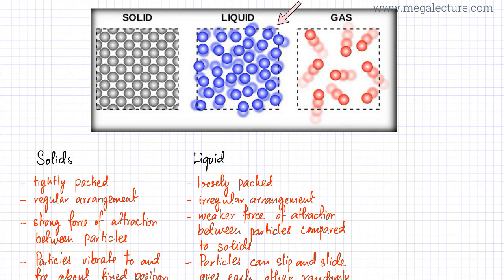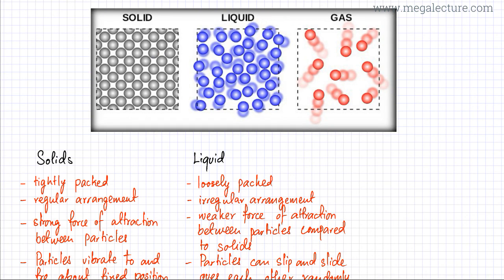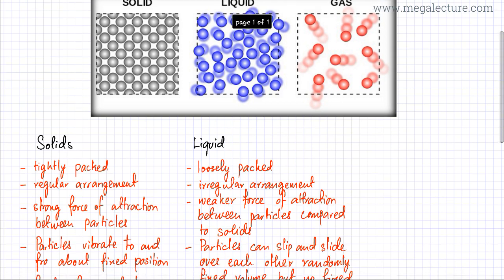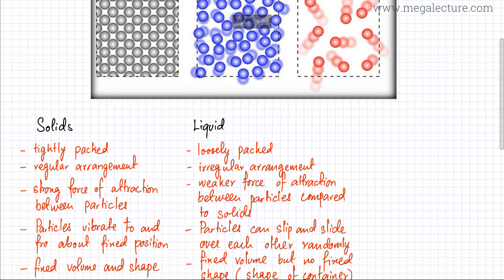We will now discuss the liquid state. In liquid state, particles are slightly more energetic and they're able to move around but not freely. They can slip and slide over each other because they're more energetic and can overcome the force of attraction which was keeping them stationary in solid state. The first property is that they lose the tight packing — there are some gaps between particles because particles are energetic and push each other around, which creates some gaps. There is also an irregular arrangement because particles are not orderly arranged.